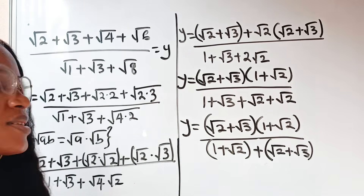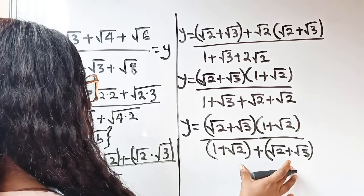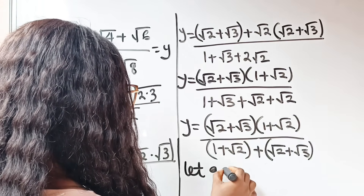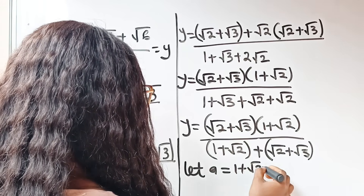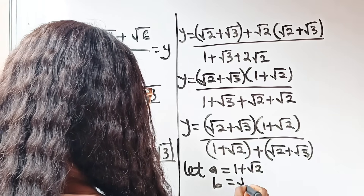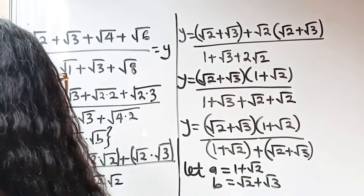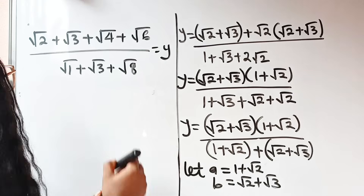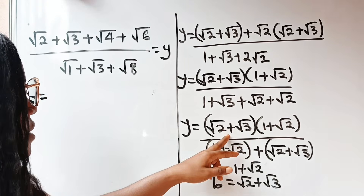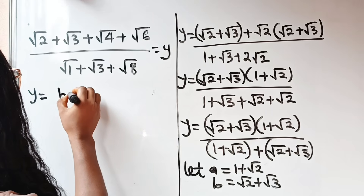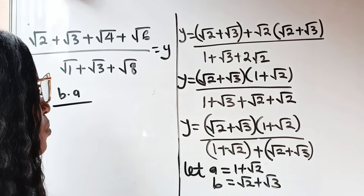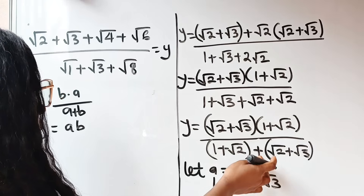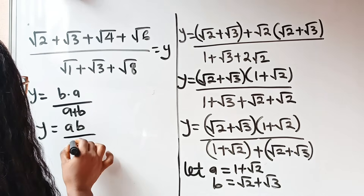Continuing, because we have something similar both in the numerator and denominator, we can name them. Let A equal 1 plus root 2, and let B equal root 2 plus root 3. Using these substitutions, Y equals B multiplied by A divided by A plus B — that is, Y equals AB over A plus B.